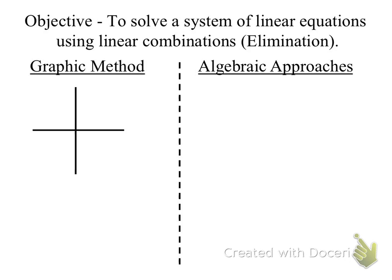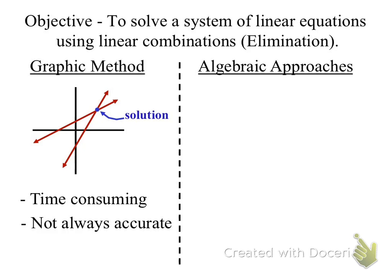The graphic method is where we graph two linear equations called a system and we look for the point of intersection. This is time consuming and it's not very accurate. Because if we end up in a fractional area, it's hard to eyeball with the human eye.